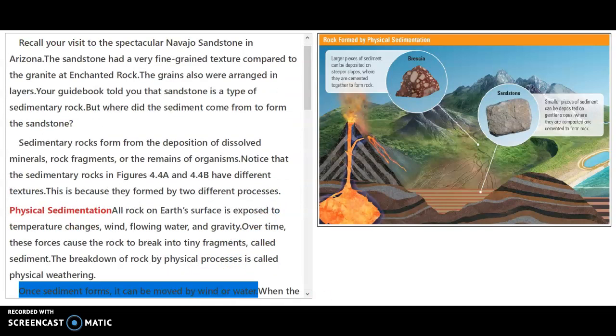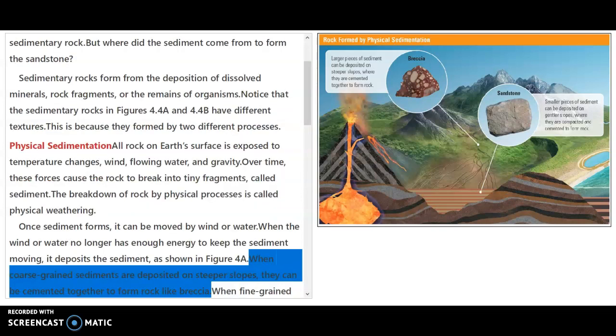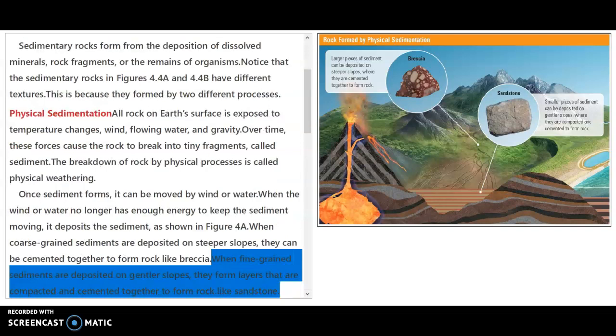Once sediment forms, it can be moved by wind or water. When the wind or water no longer has enough energy to keep the sediment moving, it deposits the sediment, as shown in Figure 4a. When coarse-grain sediments are deposited on steeper slopes, they can be cemented together to form rock like breccia. When fine-grain sediments are deposited on gentler slopes, they form layers that are compacted and cemented together to form rocks like sandstone.